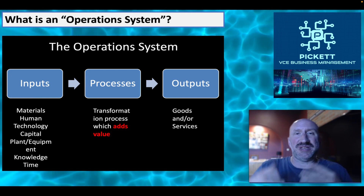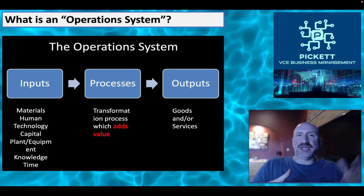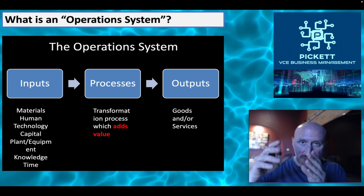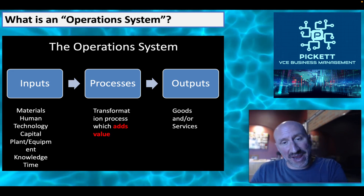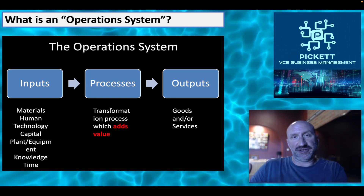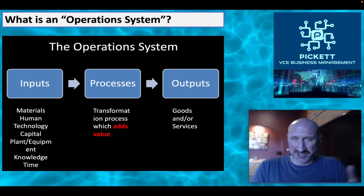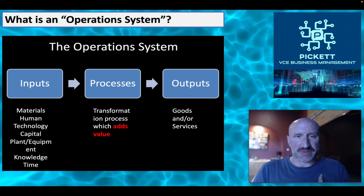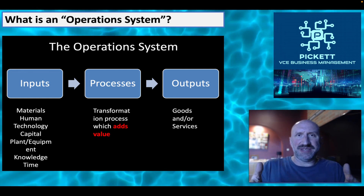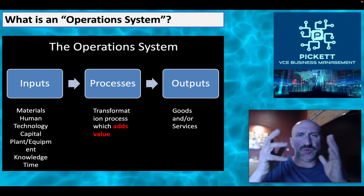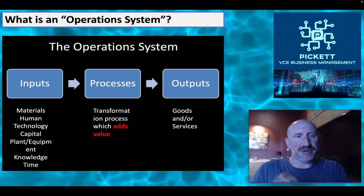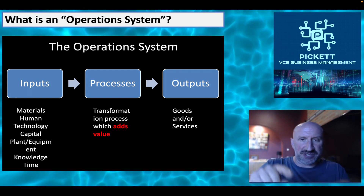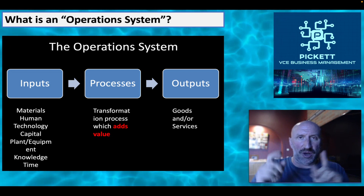Processes is basically the transformation process, which adds value. So we've taken all of our inputs, we do something to them which adds value to them, and that ultimately becomes our output — which is either the good or the service that we're selling to our customers. Within a business, there can be many, many different processes, not just one. That will become apparent as we move through and look at some examples. But focus: inputs, processes, outputs — always when you see 'operations system.'